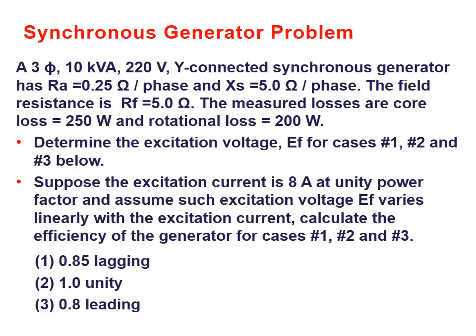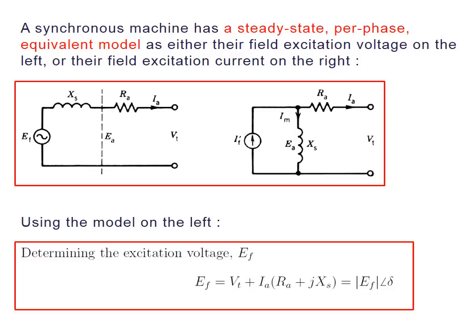Assume the excitation current is 8 amps at unit power factor, and assume the excitation voltage varies linearly with the excitation current. Calculate the efficiency of the generator for cases 1, 2, and 3. The three cases are: 0.85 power factor lagging, unity power factor, and 0.8 leading power factor.